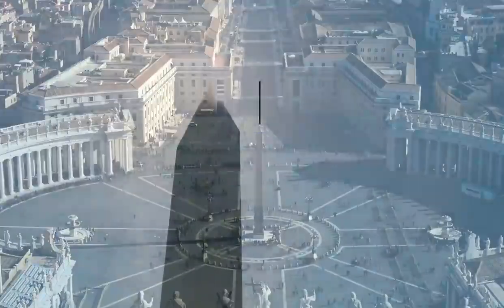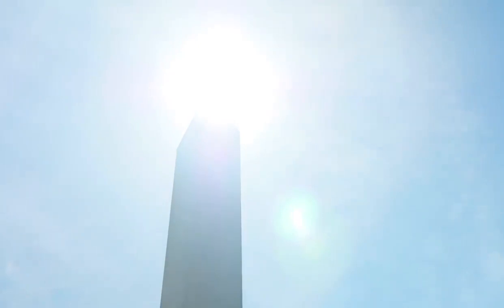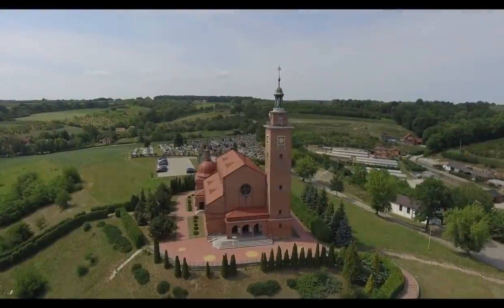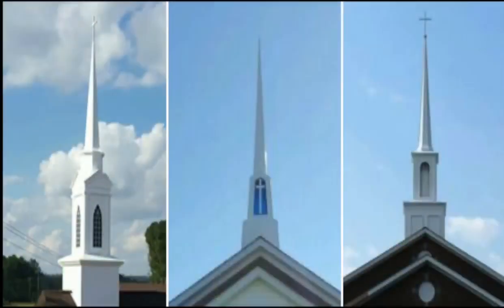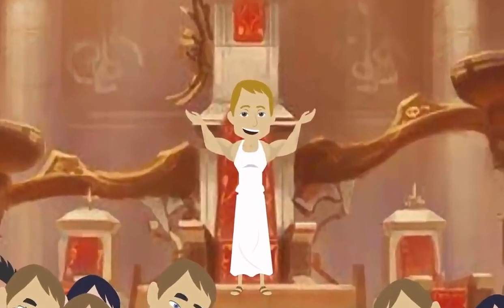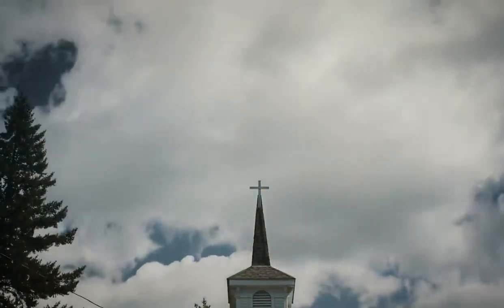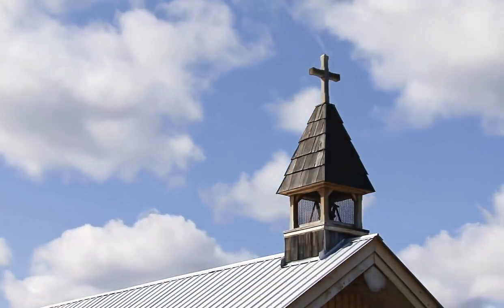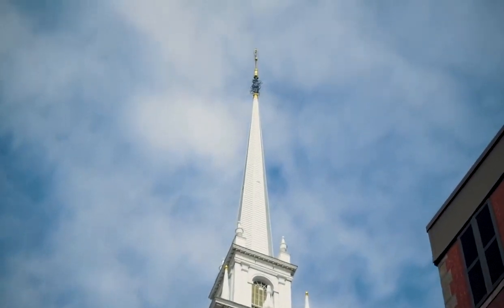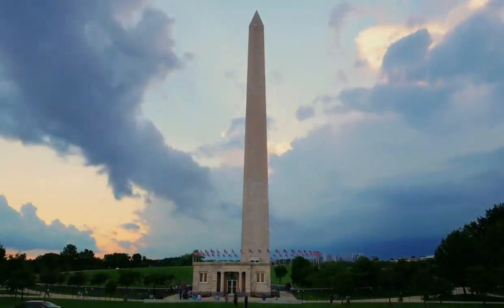Deuteronomy chapter 16 verse 22 says, 'You shall not set up a sacred pillar, which Yahweh your Elohim hates.' This symbol has been adopted by many proclaimed Christian churches — they are not calling them obelisks but steeples. Steeples have been included in church buildings since the conversion of Constantine and his proclamation making Christianity the official religion of his Roman state. The church tried to hide it by adding crosses at the top. Anytime you see this symbol, remember it is a pagan symbol paying homage to the sun god.